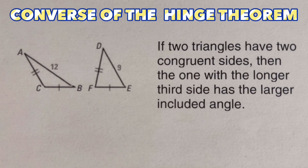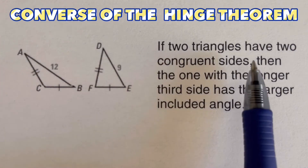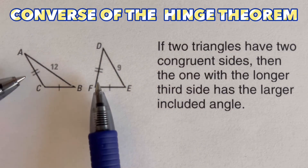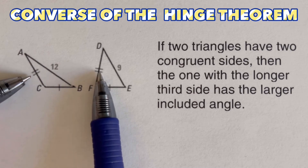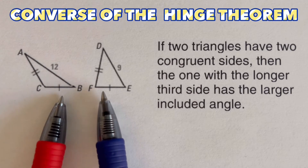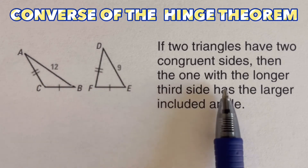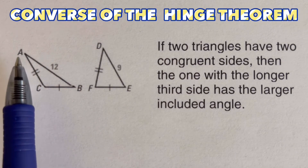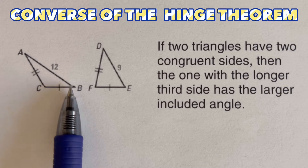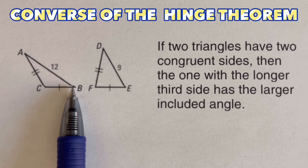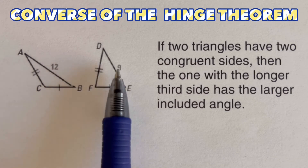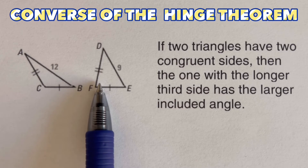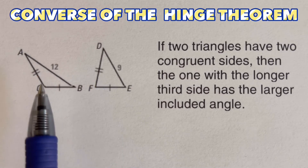Now for the converse of the Hinge Theorem: if two triangles have two congruent sides — here AC and FD, and CB and FE — then the one with a longer third side has the larger included angle. So if the third side is longer, the angle across from it is bigger.